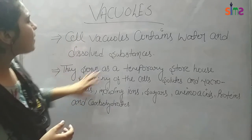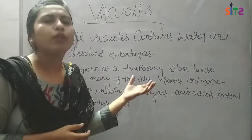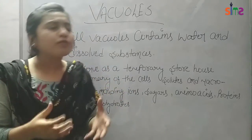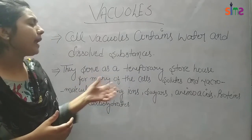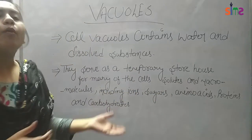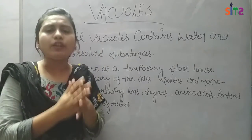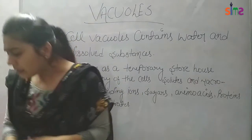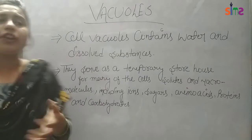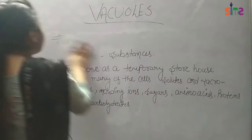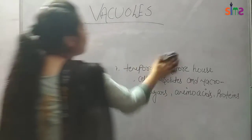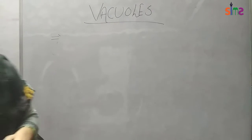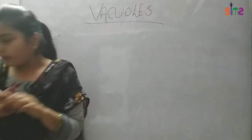Vacuoles serve as a temporary storehouse for many of the cell's solutes. They are a temporary storehouse within the cell. Macromolecules like ions, sugars, amino acids, proteins, and carbohydrates are stored there — a temporary storehouse in the cell.